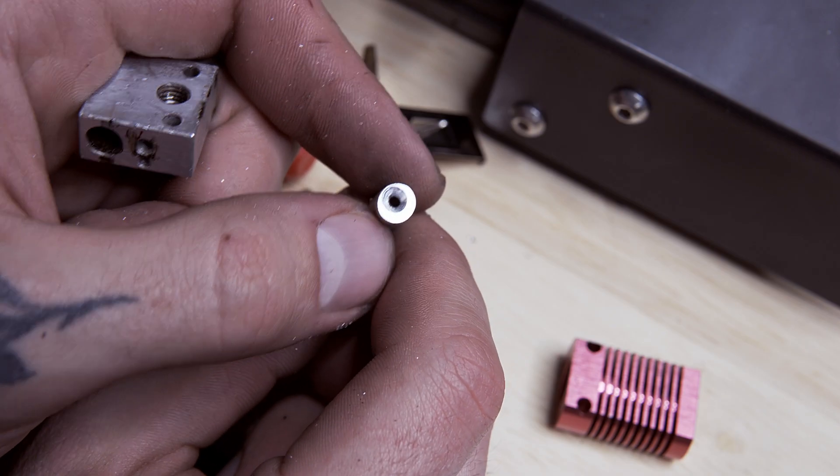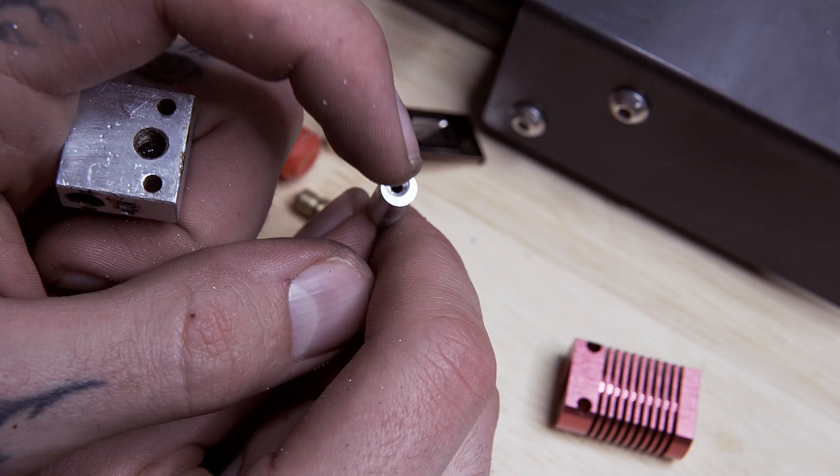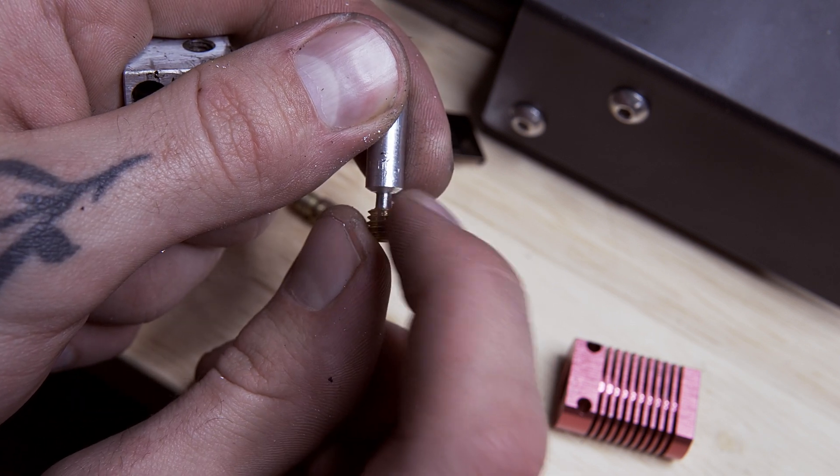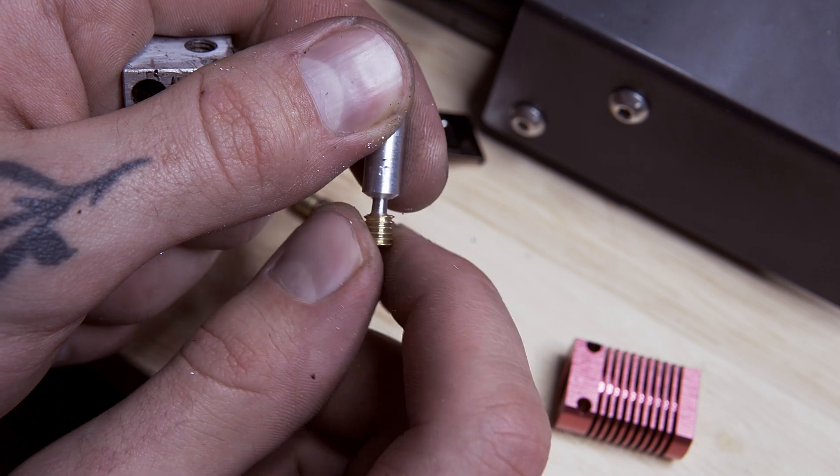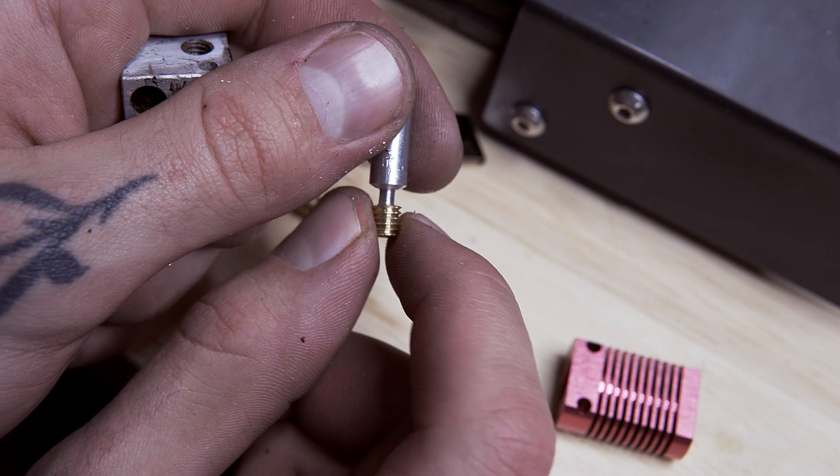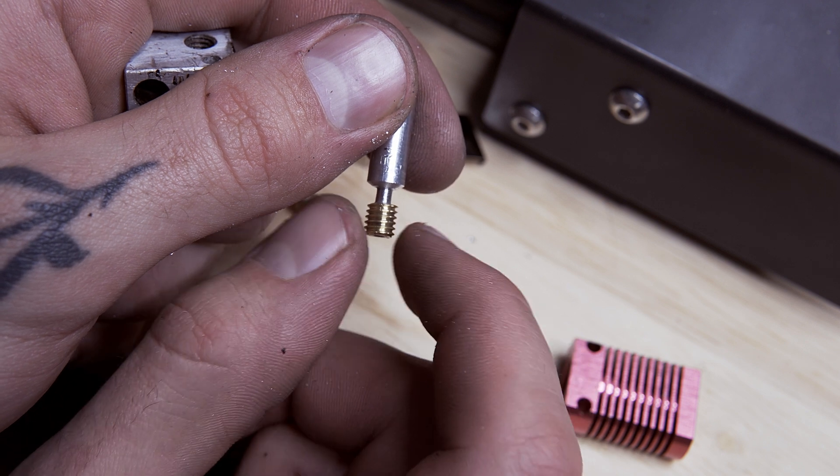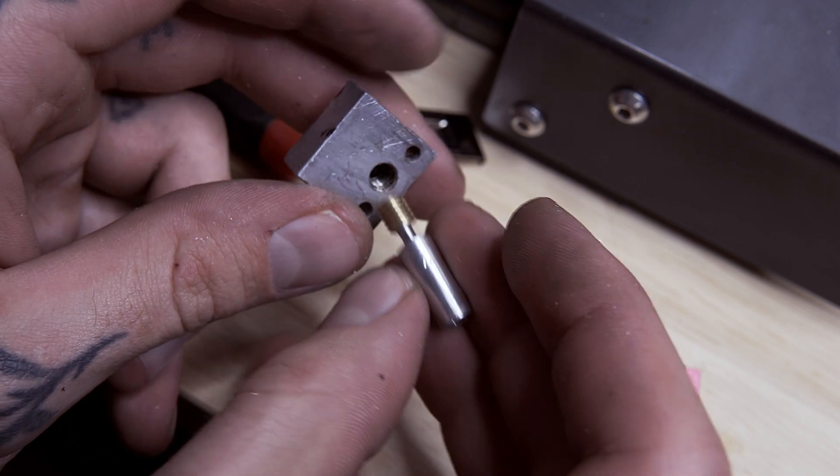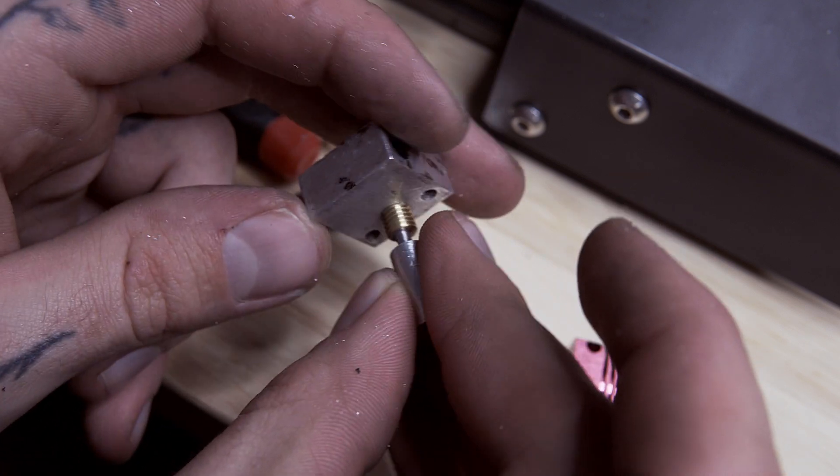I countersunk the top hole because it was slightly offset, and I want the filament to be able to travel in there pretty nicely. I also took down the thickness of the connecting tube here. So it's about 2.8 millimeters, which gives us a wall thickness of about 0.4 millimeters, which I'm happy with. Let's give it a little bit of a test for it.